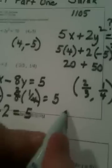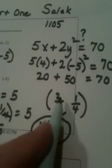6 minus 2 equals 5. No, it does not. Therefore the ordered pair (2/3, 1/4) is not a solution of this equation.